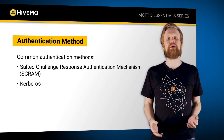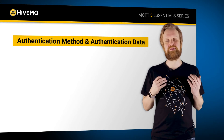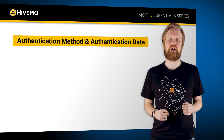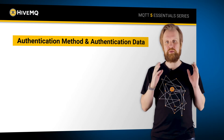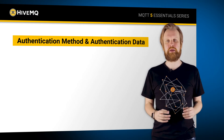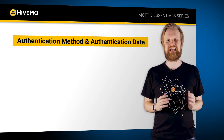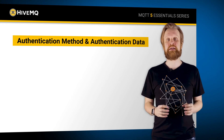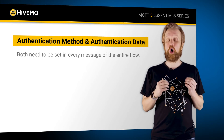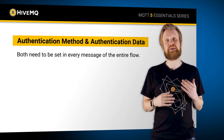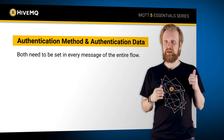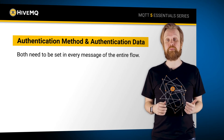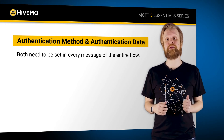When you want to be using an enhanced authentication mechanism, two attributes are important: the authentication method and the authentication data. Both the method and the data need to be set in all the packets that partake in the authentication flow — so definitely the CONNECT, all of the auth packets, and the CONNACK packets.